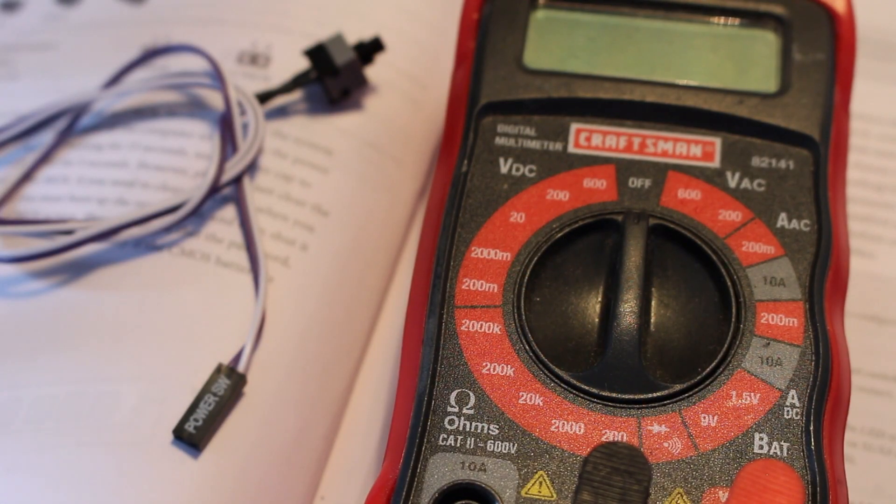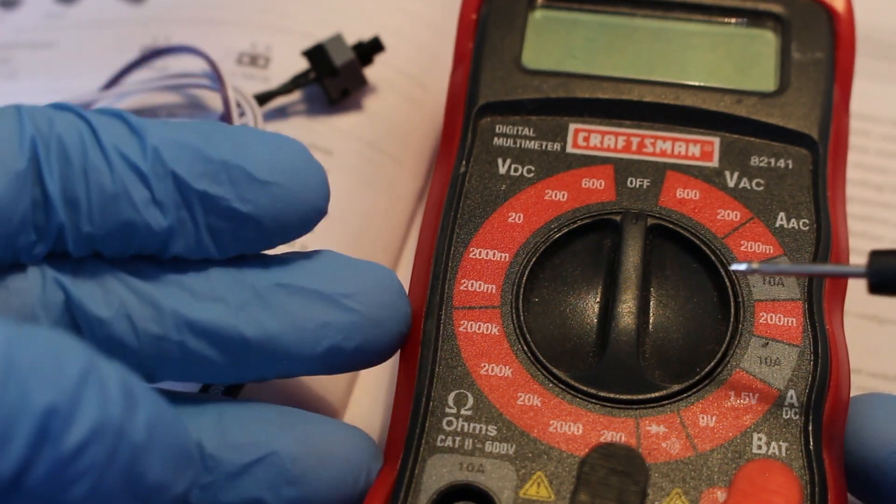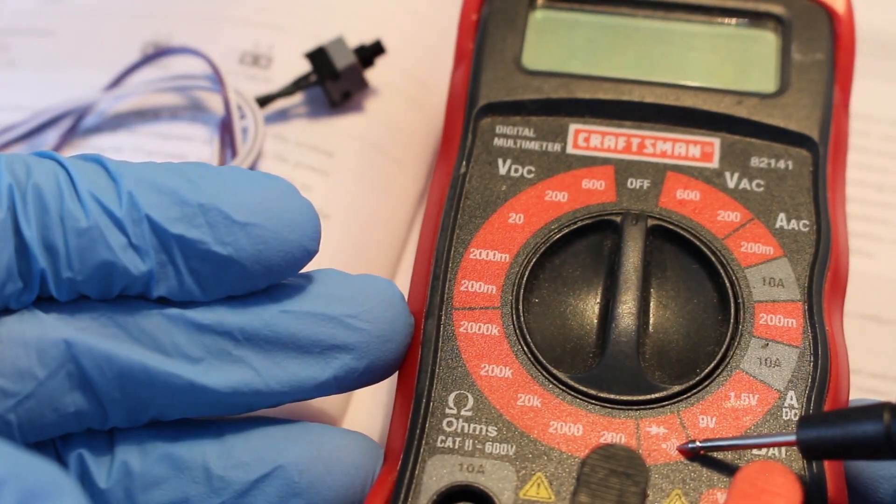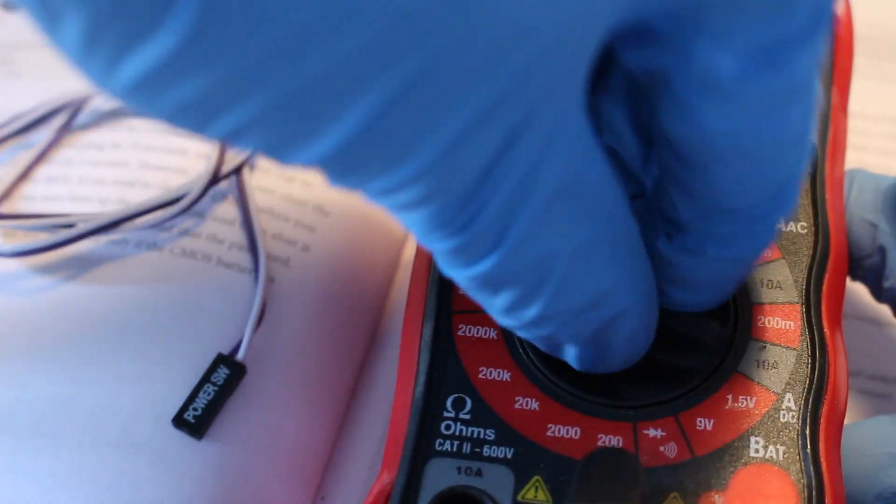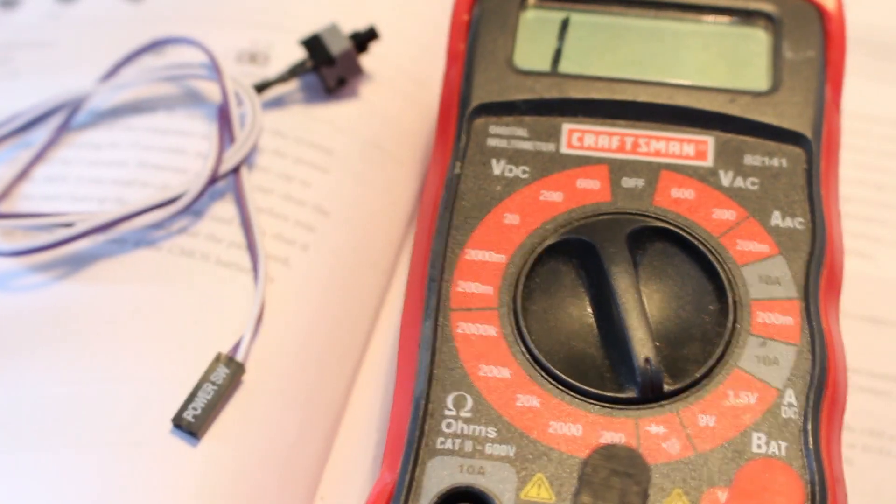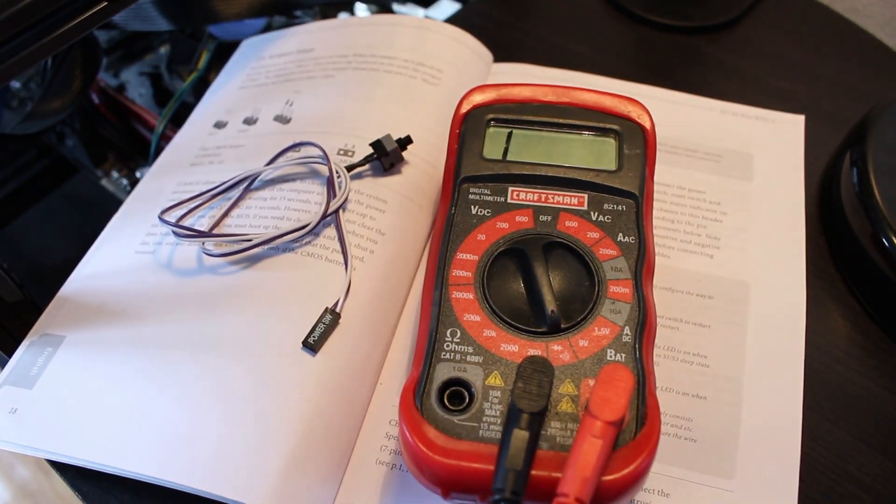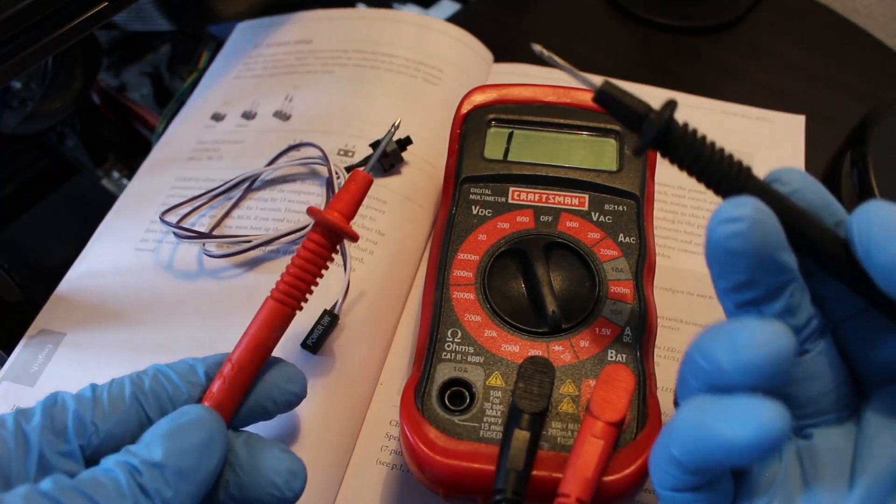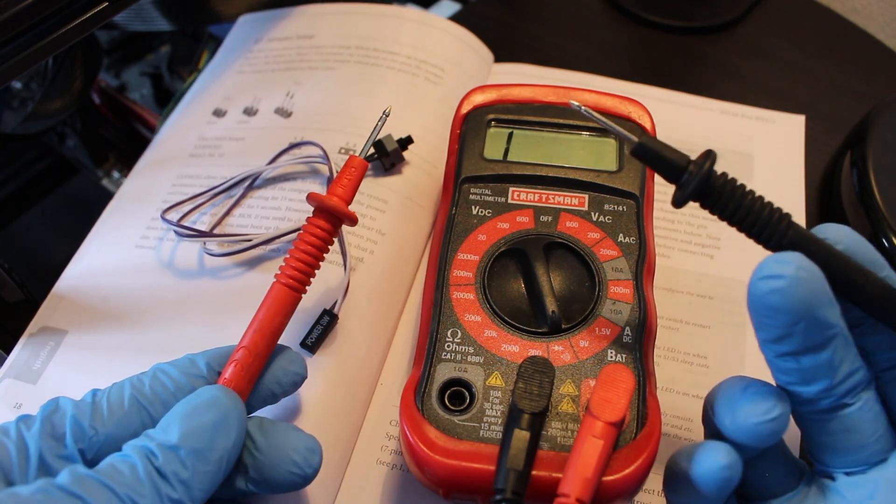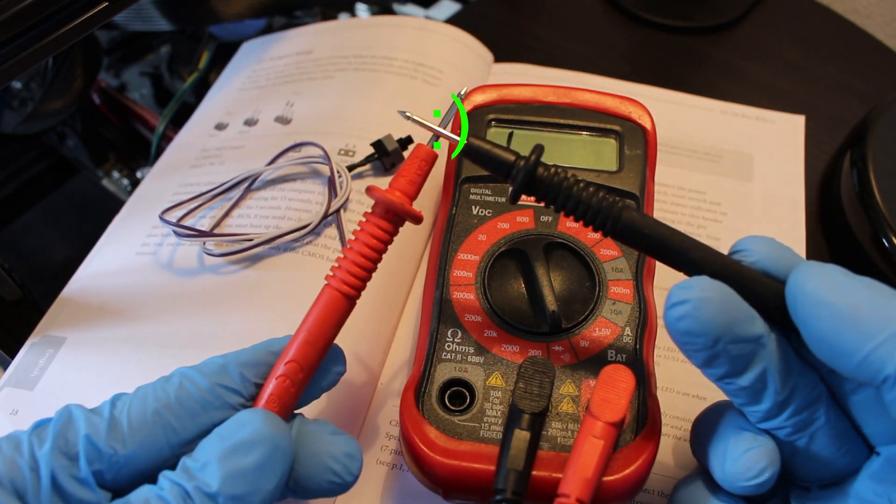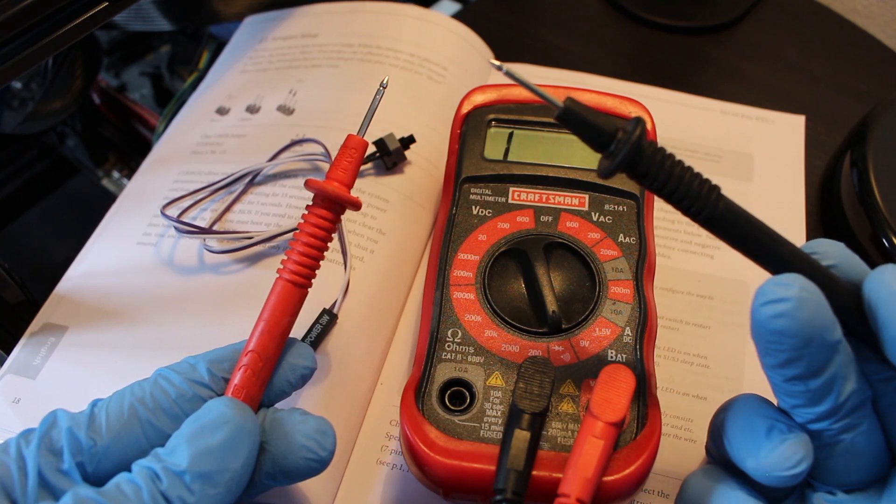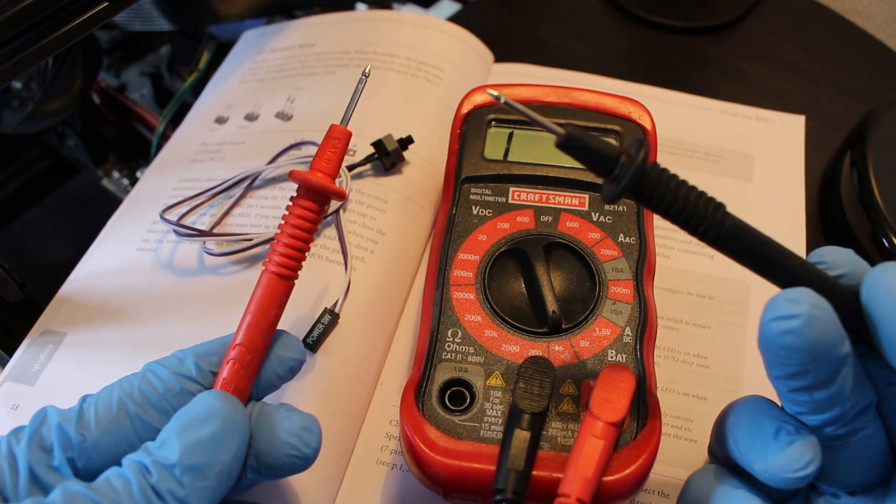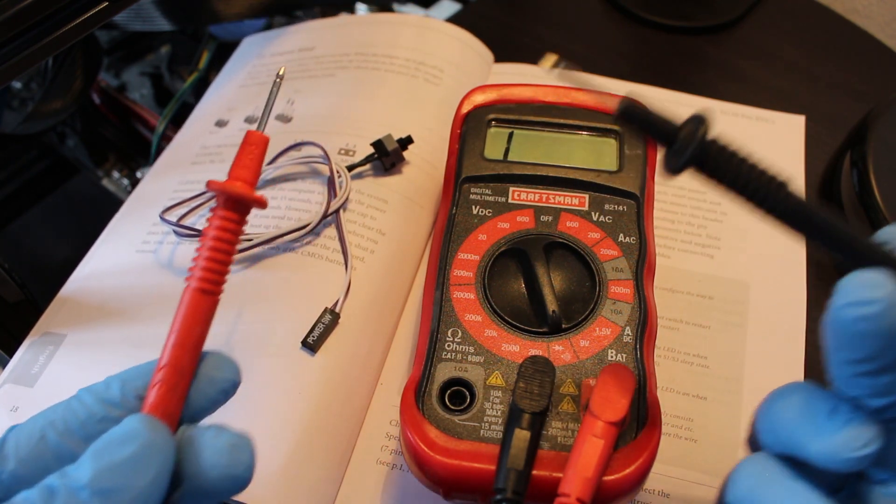Okay, we're going to start by setting our meter to continuity, which is specifically this symbol right here. Zoom out, and once our meters are set to continuity, we're going to take our two leads and we're going to short them out by touching them. Once we've shorted it out and we hear that noise, we know we have continuity and this meter works.